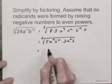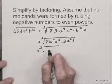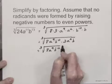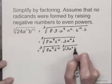And taking cube roots here, I have the cube root of 8a to the 9th, b to the 12th times the cube root of 3a squared b.